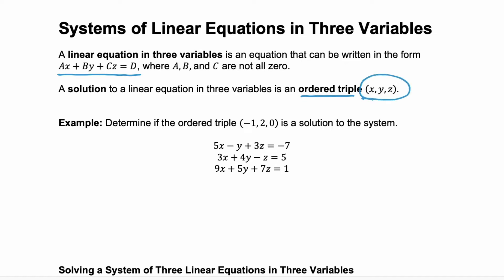Notice that they're in alphabetical order. Now, what if you're given an ordered triple and you want to know if it's a solution to a system? That's our first example. Well, to be the solution to a system, that ordered triple needs to work for all of the equations in the system. So what you do is you substitute in those values for the variables, and solve each equation, and verify that it's a true statement.